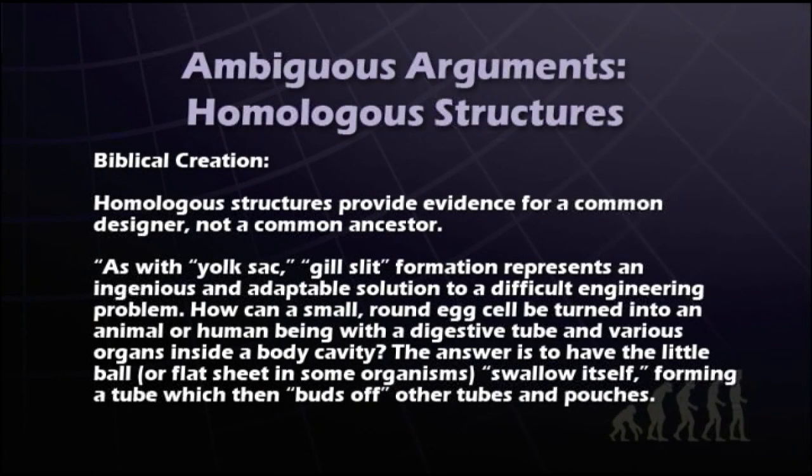We can go a step further and show that homologous structures actually demonstrate the incredible engineering and design that goes into life. With that incredible engineering, God uses some of the same techniques for different life forms. What an evolutionist would view as homologous structures indicating that some types of life turned into other types of life, a Christian could view as evidence of just the incredible intelligence, the omniscience and omnipotence of God.